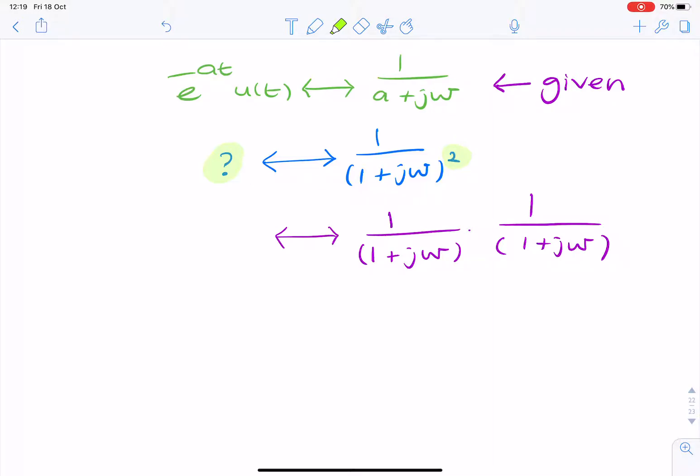Now, remember the convolution property of the Fourier transform. It says when you multiply in the frequency domain, the equivalent operation in the time domain is a convolution.